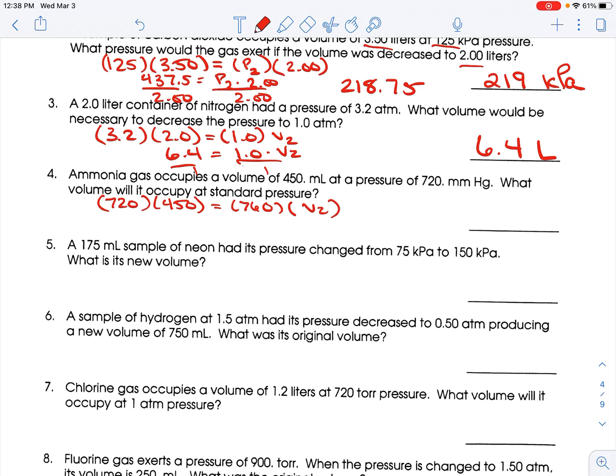So, 720 times 450 is 324,000 equals 760 times V2. Divide both sides by 760, and I get 426.315. So, three sig figs, three sig figs. The standard does not have sig figs, it's the standard. So, three sig figs would be 426 milliliters.